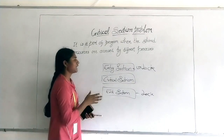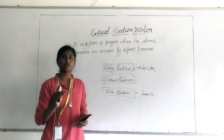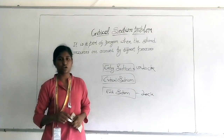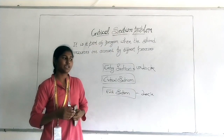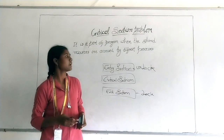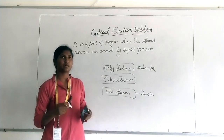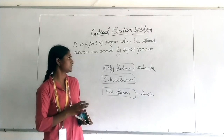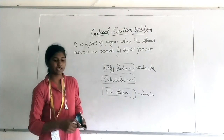To solve the problem so that the critical section is used by only one process at a time, there are many solutions. There are well-known solutions you can use, or you can create your own. The main solutions are Peterson solution, semaphore, and monitor. These are the solutions for the critical section problem.